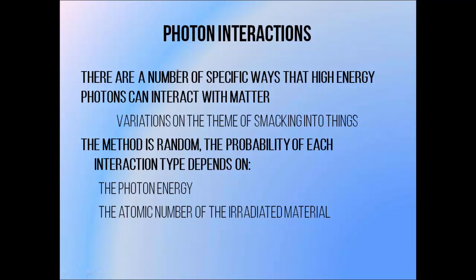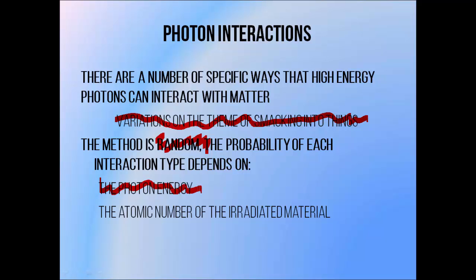There are only a certain number of ways that the X-rays and gamma rays used in radiotherapy can interact with matter and cause ionization. Basically, they're all variations on the theme of smacking into things — photons colliding and causing the release of energetic particles like secondary electrons, which pass through matter and cause further ionization. We have no way of predicting which method an individual photon will use, so the selection of the process is actually quite random. But we can get an idea of which processes are likely based on the energy of the photon and the material through which it's passing, in particular its atomic number.